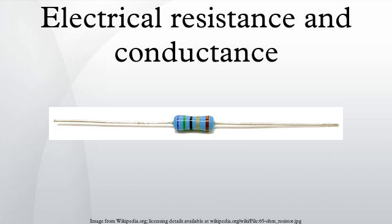Dependence of resistance on other conditions — temperature dependence: Near room temperature, the resistivity of metals typically increases as temperature is increased, while the resistivity of semiconductors typically decreases as temperature is increased. The resistivity of insulators and electrolytes may increase or decrease depending on the system. As a consequence, the resistance of wires, resistors, and other components often change with temperature. This effect may be undesired, causing an electronic circuit to malfunction at extreme temperatures. In some cases, however, the effect is put to good use. When temperature-dependent resistance of a component is used purposefully, the component is called a resistance thermometer or thermistor.